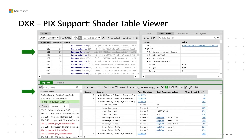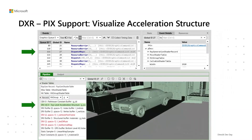PIX on Windows offers tremendous help when developers are using DXR. For example, when game developers select the dispatch rays event, they can view details of shader tables in the pipeline window. Similarly, they can also visualize acceleration structures in the same window.